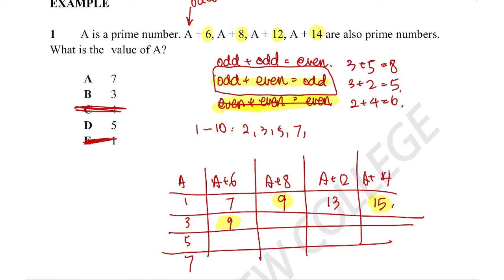For A = 5: 11, 13, 17, and 19. That looks good—none are divisible by anything other than themselves and 1. But let's check A = 7: we get 13, then 15, which isn't prime. So the only row without non-prime numbers is A = 5.